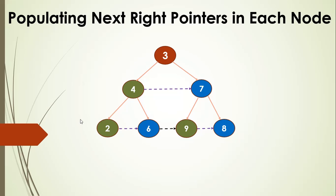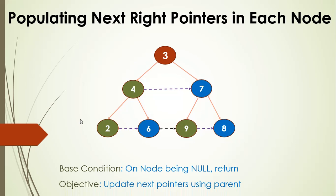This is how we can do it using recursion. For recursion, two things are important: the base condition and the objective. The base condition is when node is null, you just return. The objective is to update the next pointers using the parent node, so we need to maintain the parent node in our recursion. Let's go back and write some code.